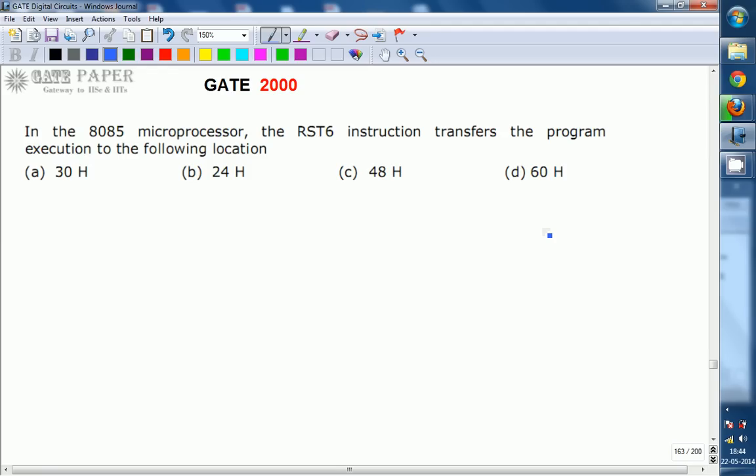Upon the occurrence of RST6 Restart 6 instruction, the program execution will be going into which memory location? A: 30H, B: 24H, C: 48H, D: 60H.